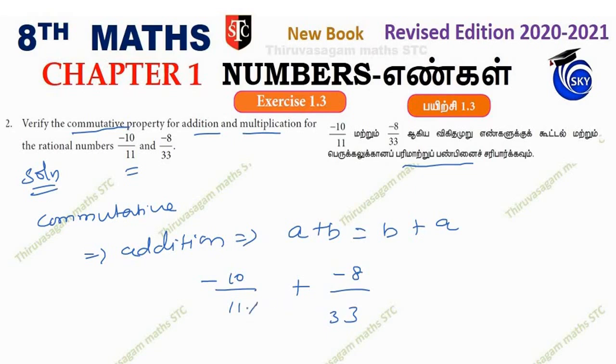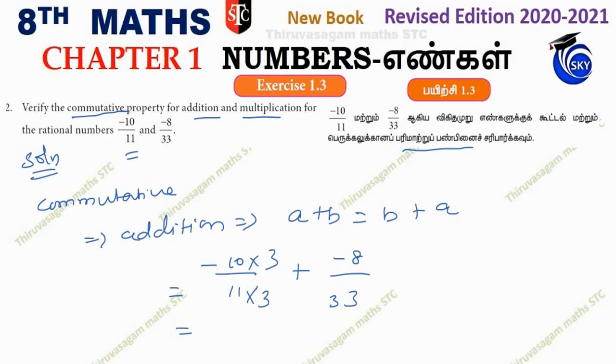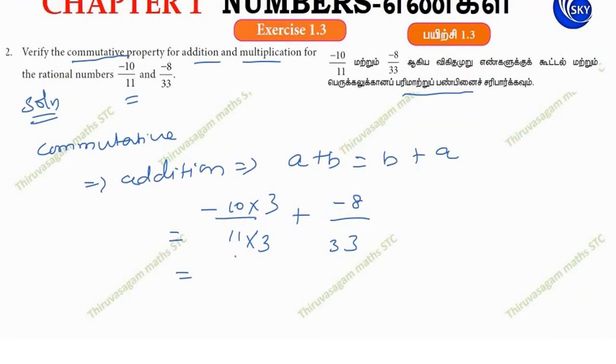We multiply to make the denominators equal. 10 times 3 is 30, minus 30. So the common denominator is 33.